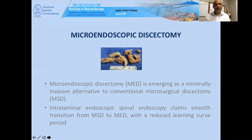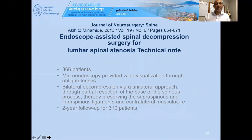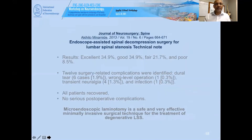Interlaminar endoscopy claims a smooth transition from microscopic to microendoscopic surgery, decreasing the learning curve. A 2013 study with 366 patients showed that microendoscopy provides wide visualization through an oblique lens and bilateral decompression via a unilateral approach, going over the top. Two-year follow-up with 310 patients showed 35% excellent results, 35% good, 22% fair, and 8% poor. Twenty percent of surgery-related complications included dural tear and wrong-level operation, but all patients recovered with no serious post-operative complications.